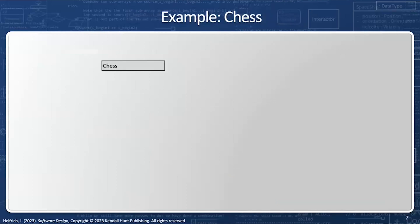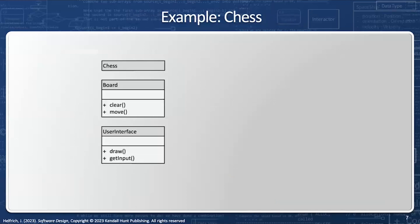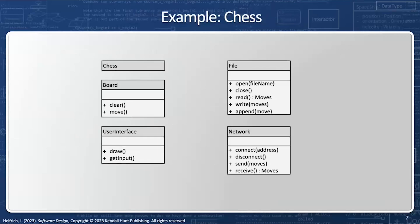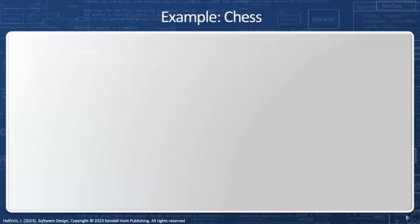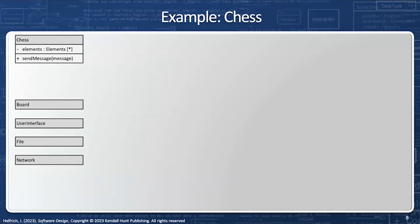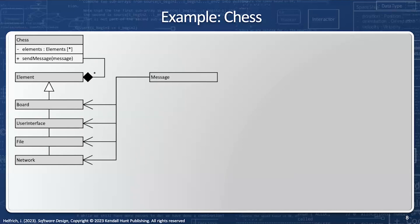Let's take another example — chess. Chess is going to have a board, a user interface, a file system, and a network system. With the current implementation, the chess game has to know all about network, file, board, and user interface — in other words, these different components are highly coupled, which is undesirable. So now I'm going to have chess with a collection of elements: board, user interface, file, and network — each highly distinct and unique. Chess is going to have several elements, and board, user interface, file, and network all derive from element. Chess is going to instantiate a message object and send it to the element through a send messages function.